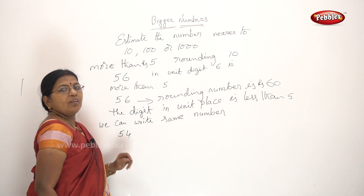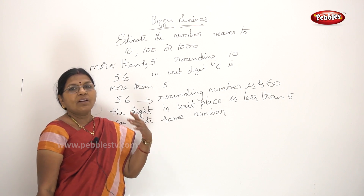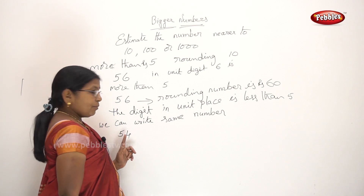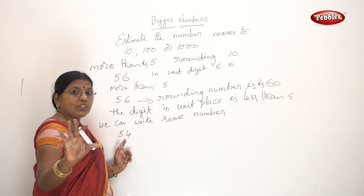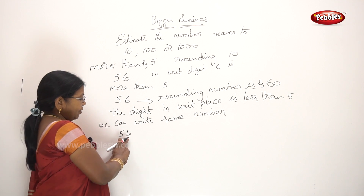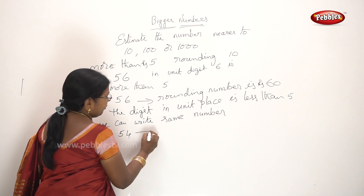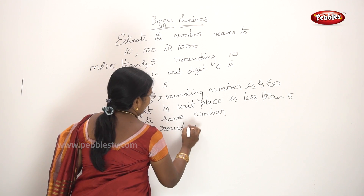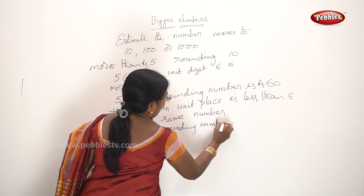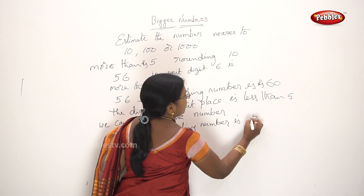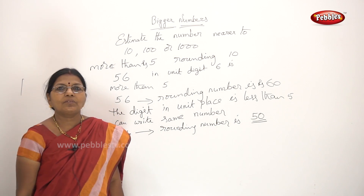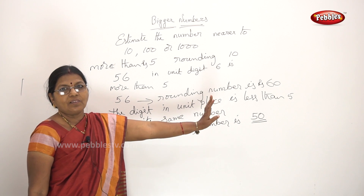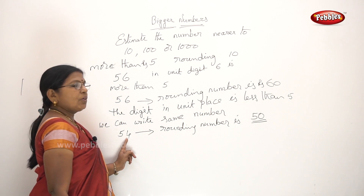Numbers less than 5 in the unit place: 4, 3, 2, 1, 0. This is 5. What do we do here? We can tell you how to use a digit in the unit place. Take the number 54. What is the rounding number? 50. Instead of 4, we should write 0 only. In the units place, we can write 0.